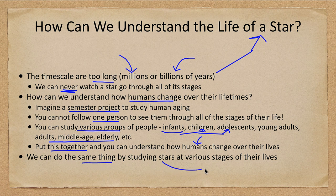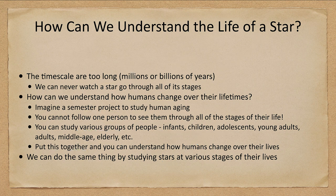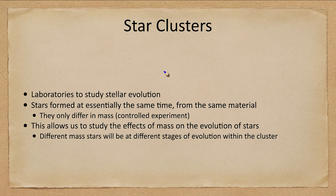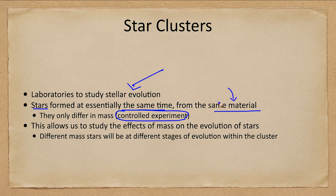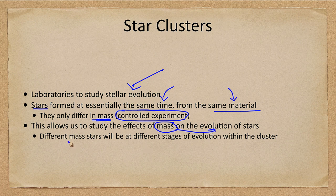We can do the same thing by studying stars at various stages of their lives. We use star clusters — they are our laboratories to study stellar evolution. Stars in a cluster formed at the same time from the same material, eliminating many variables and making it a kind of controlled experiment. The major difference between these stars is their mass, so we can study the effects of mass on stellar evolution, since different mass stars will be at different stages of evolution within the cluster.